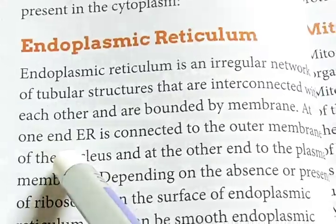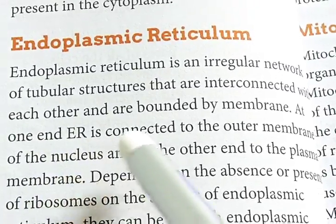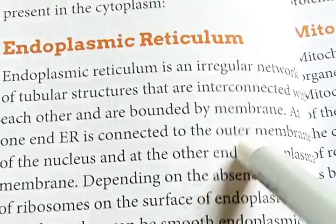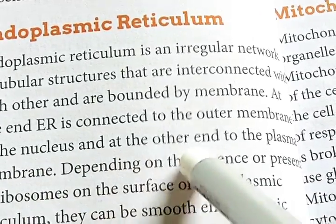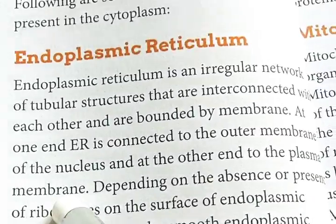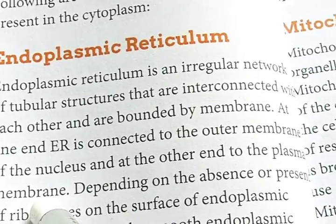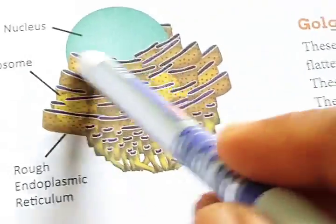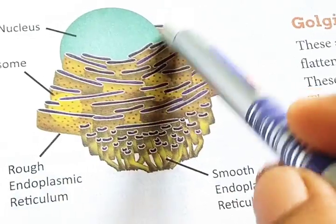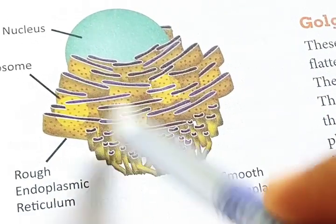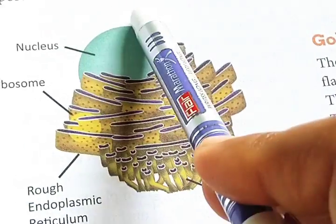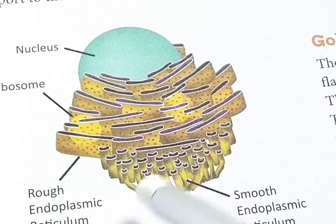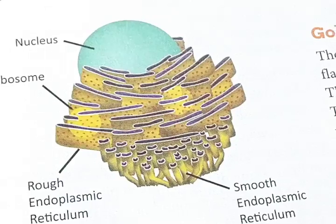At one end, endoplasmic reticulum is connected to the outer membrane of the nucleus, and at the other end it is attached with the plasma membrane. Please outline this one.